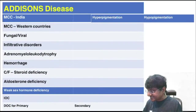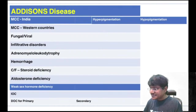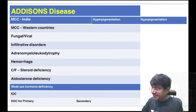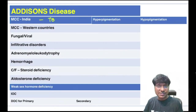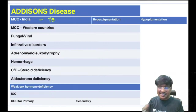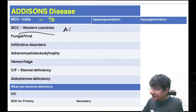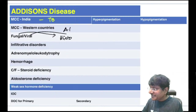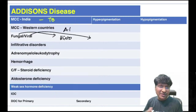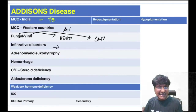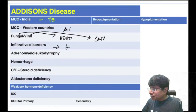Addison's disease is adrenocortical insufficiency. Most common cause in India is tuberculosis. Most common cause in western countries is autoimmune adrenalitis. Fungal cause is histoplasmosis. Viral cause is cytomegalovirus. Infiltrative disorders causing Addison's include hemochromatosis and amyloidosis.